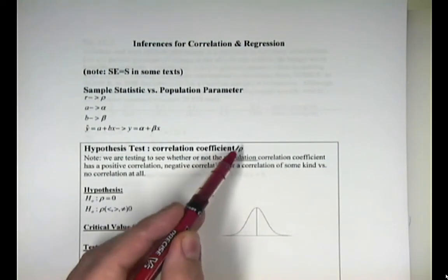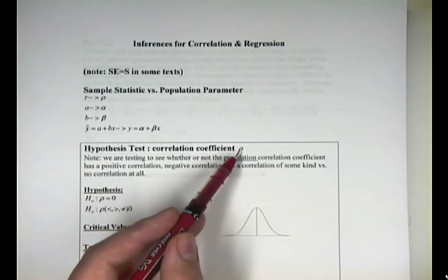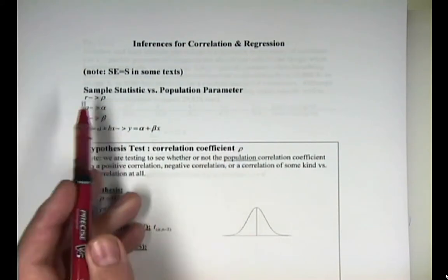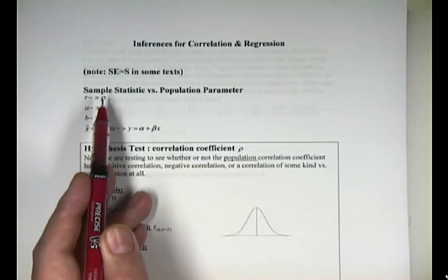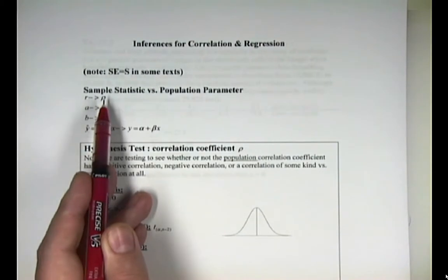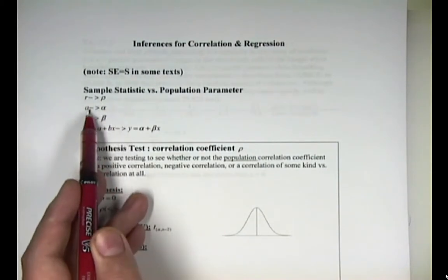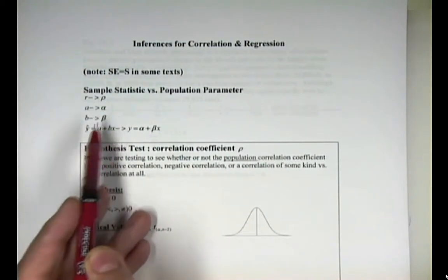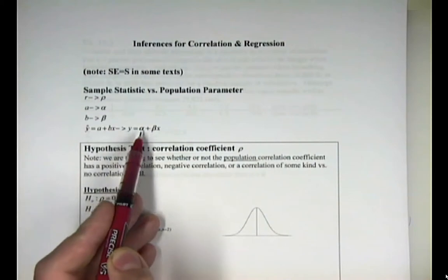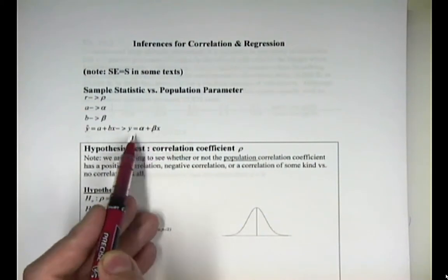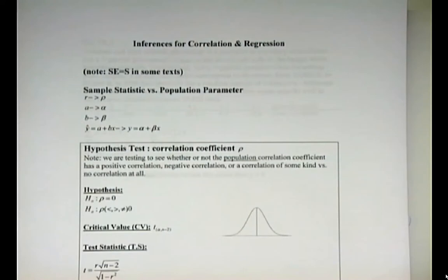Now, it looks kind of like a little funny p, but it is indeed called the Greek letter rho. Recall that in a sample statistic, if you have r, then its population parameter that goes along with it is rho. If you've got a, then it goes to alpha, b goes to beta, and y hat equals a plus bx is y equals alpha plus beta x in population terms. So just remember that population is always going to be with Greek letters.